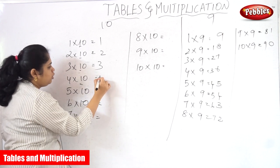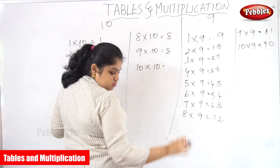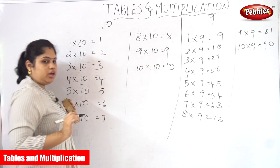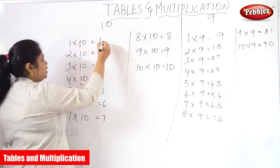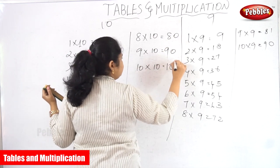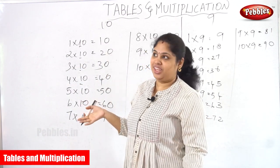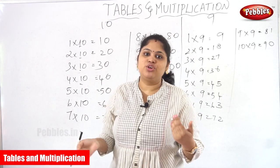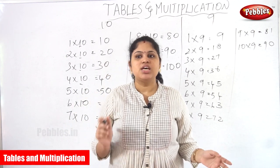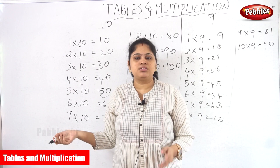3 into 10 is 3, 4 into 10 is 4 — I am just writing the first number each time. Next, what is the second digit? It is 0. So I am just putting a 0 at the end of every number. This is the 10th table. You will all memorize the 10th table very easily. For instance, what is 5 into 10? You can say easily 50 — just put 5 and 0. So the 10th table is very simple.